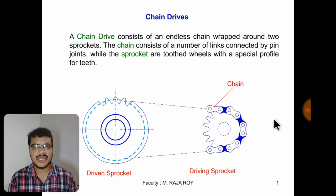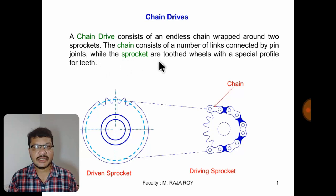Dear students and friends, in this video I am going to discuss about chain drives. A chain drive consists of an endless chain wrapped around two sprockets. The chain consists of a number of links connected by pin joints. The sprockets are toothed wheels with a special teeth profile.